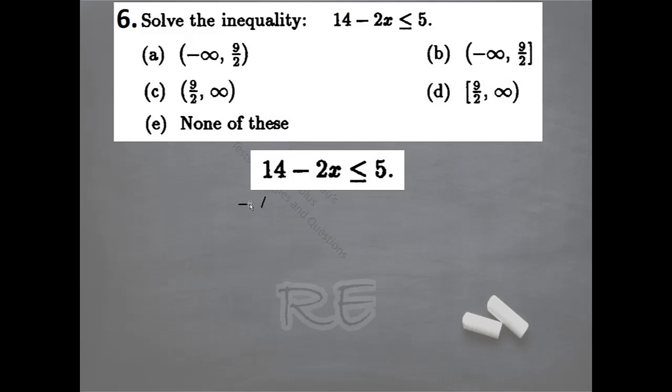14 minus 2X is less than or equal to 5. We're going to subtract 14 from both sides: negative 2X less than or equal to negative 9. Now when we divide by negative 2, we have to change the direction of the inequality. It becomes 2X greater than or equal to 9, which when divided by 2 on both sides becomes X greater than or equal to 9 halves.